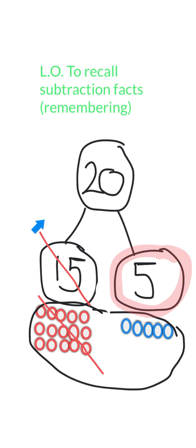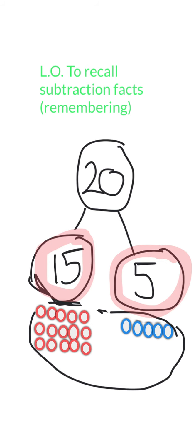So you can see we can use our cherry model to help us work out the facts. We know that 15 add 5 equals 20. We know that 20 take away 15 equals 5 and 20 take away 5 equals 15.